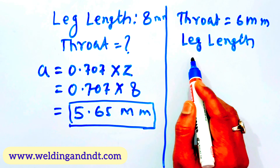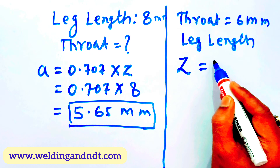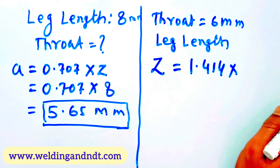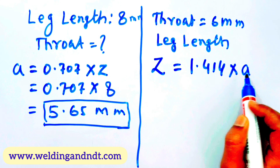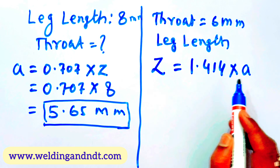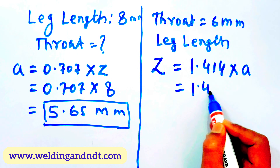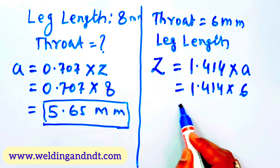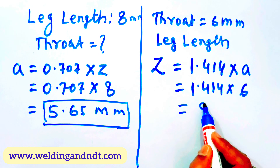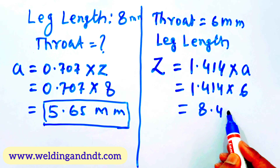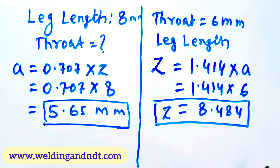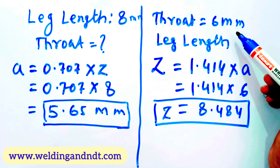In the second case, throat is given and we have to find out the leg length. The formula is Z = 1.414 × A, where Z is leg length and A is throat. Putting the values: 1.414 × 6 mm = 8.484 mm. So if the throat is 6 mm, the leg length will be 8.484 mm.